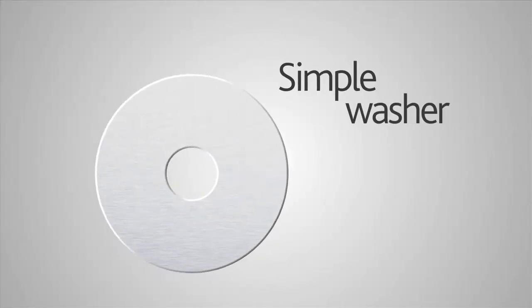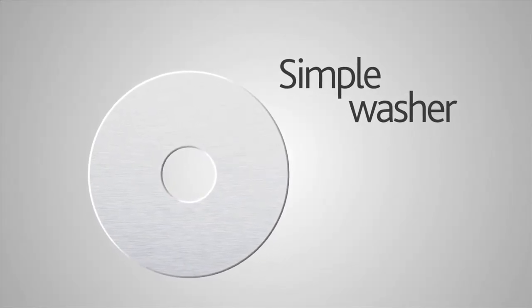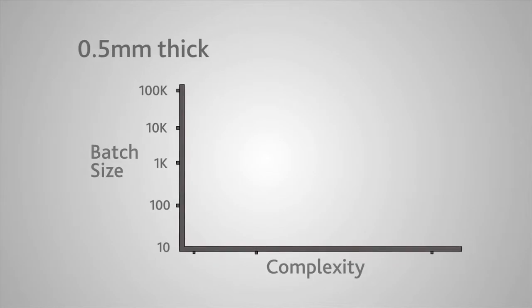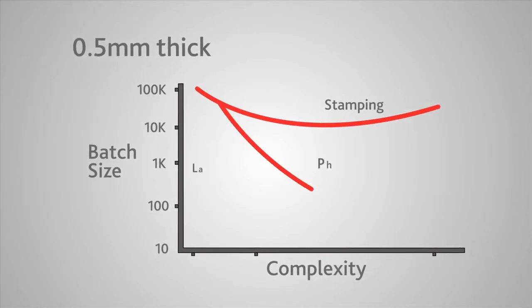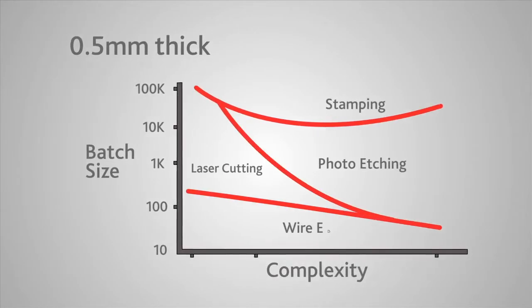The most economic production method depends to some extent on the thickness of the component you're manufacturing. If we consider a simple component such as a washer, you normally find for very large volumes you would resort to stamping where you can invest in hard tooling.